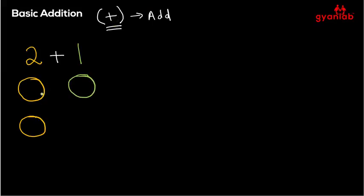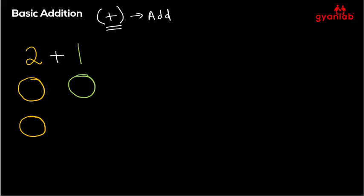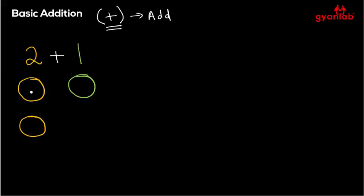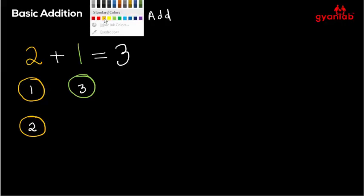Now if you start adding this up, this is one and this is two and this is three. So there are one, two, and three pieces. That means two plus one should be equal to three.